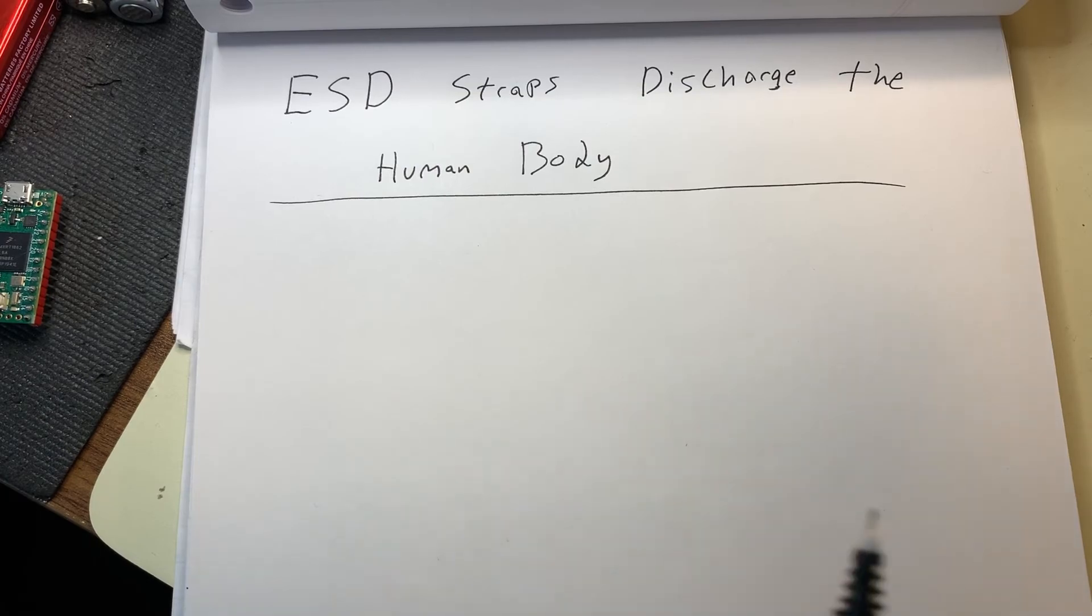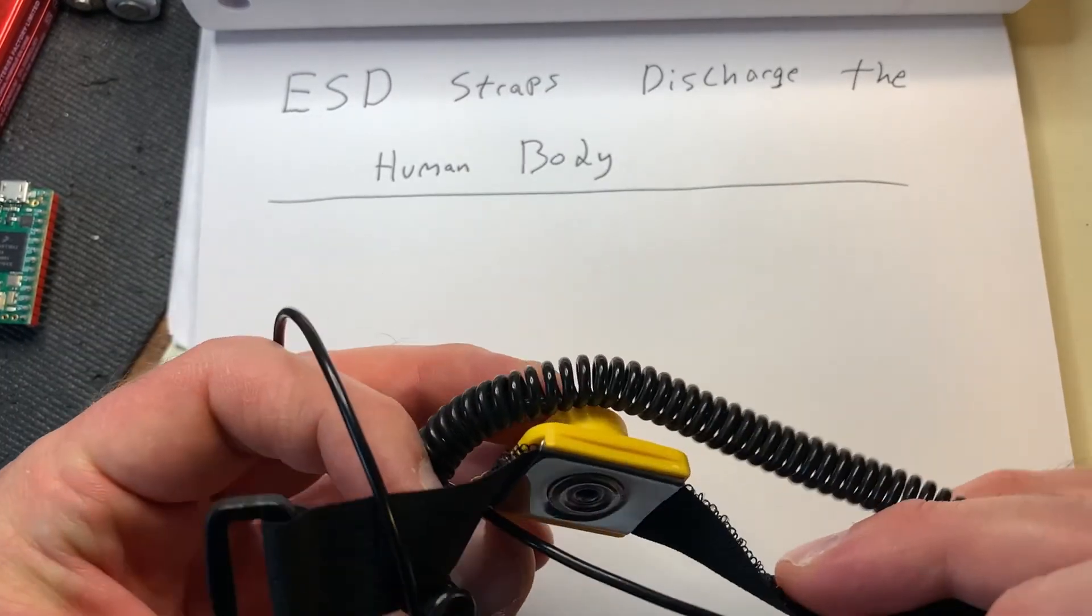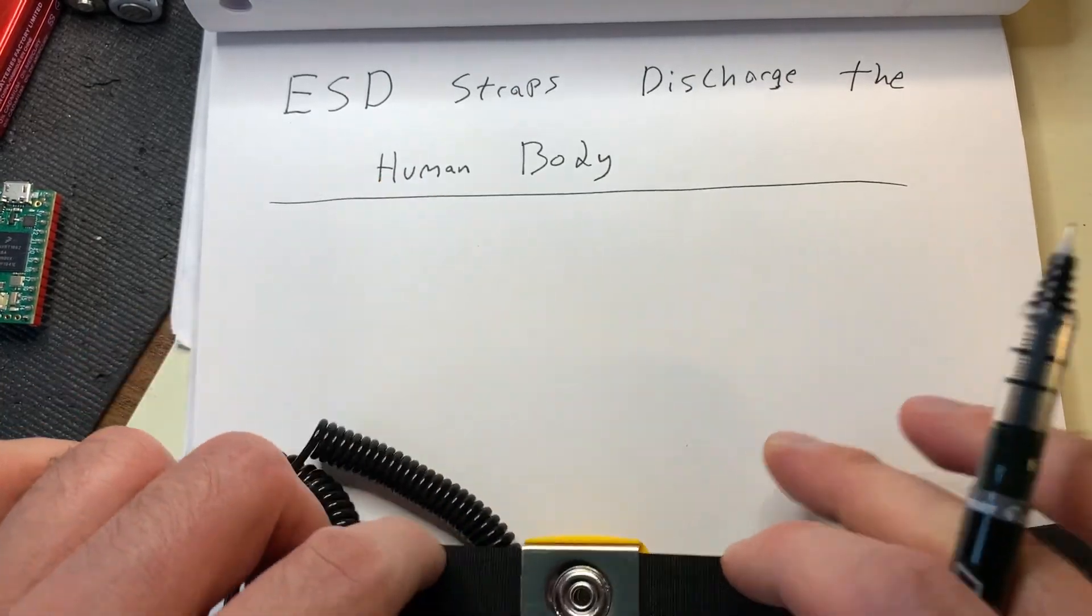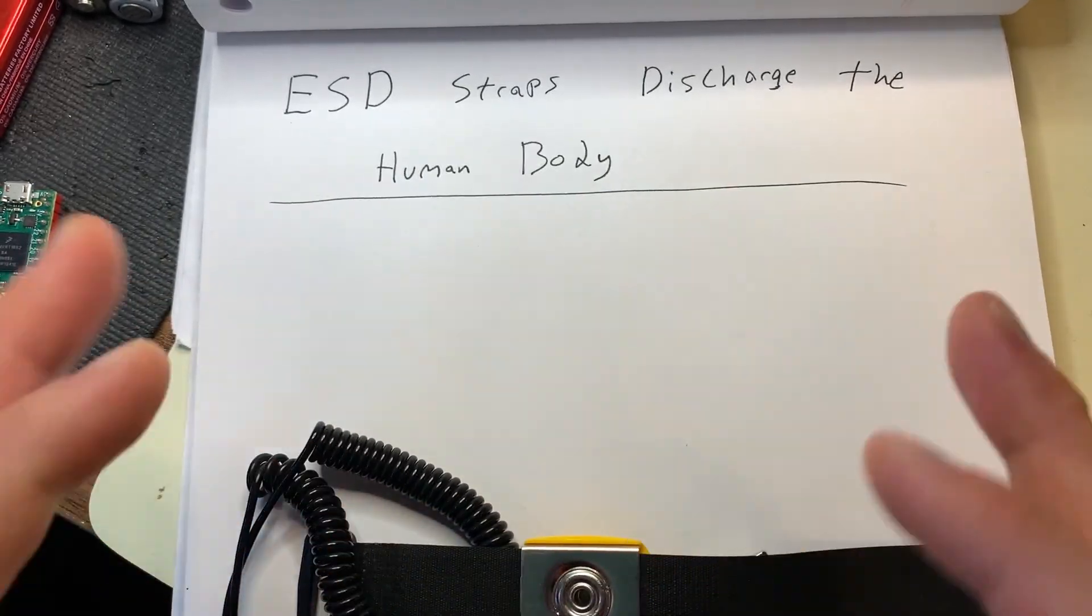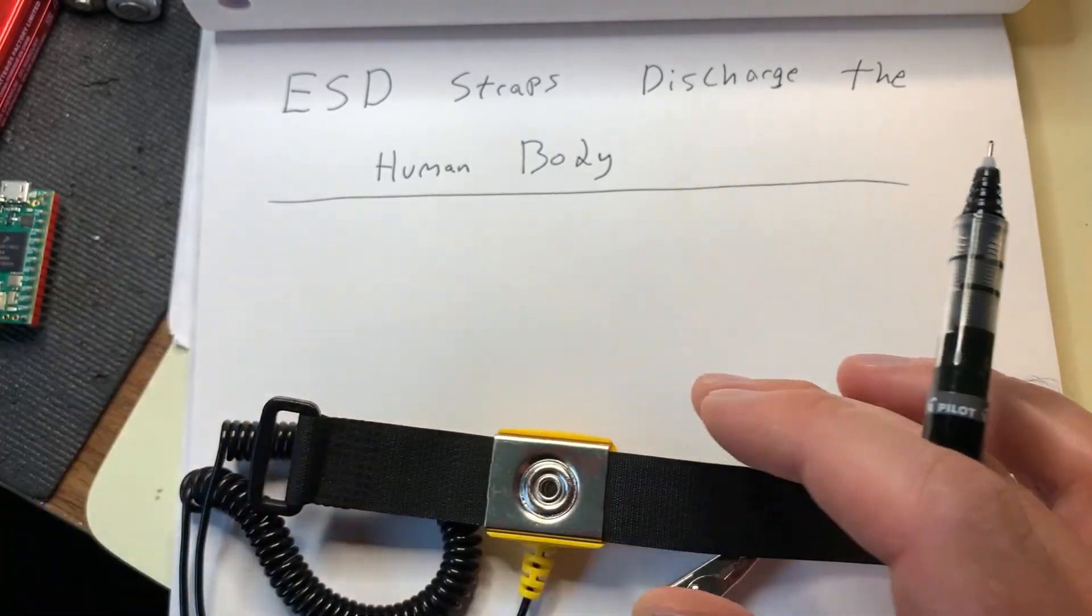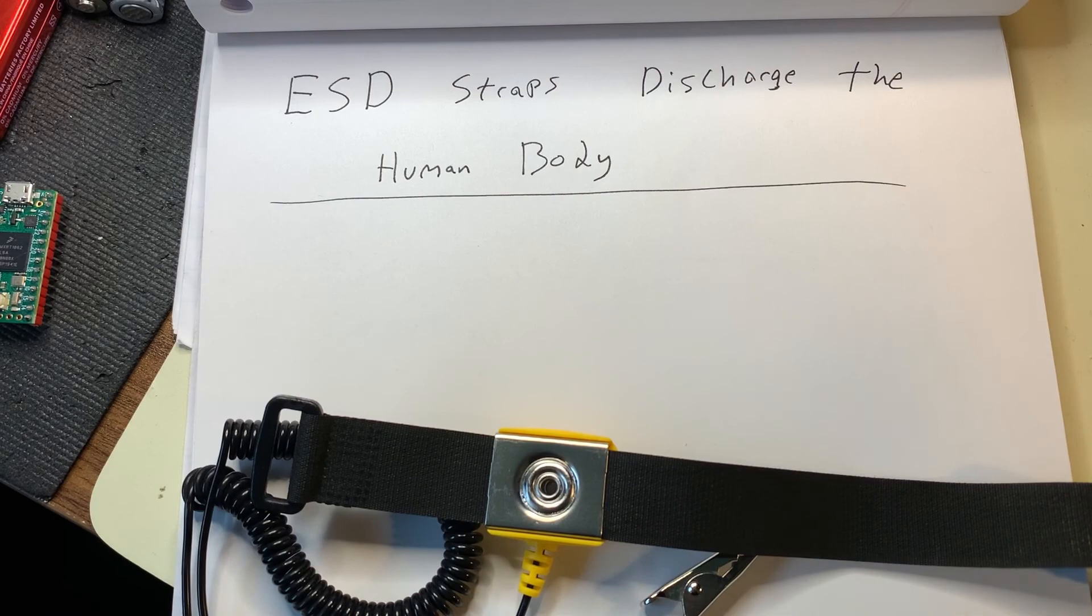So this is where ESD straps really come into play. Not only for the safety it provides you, but the safety it provides for your device that you're working on. Because effectively, the wrist strap's job is to discharge a human body's capacitance.